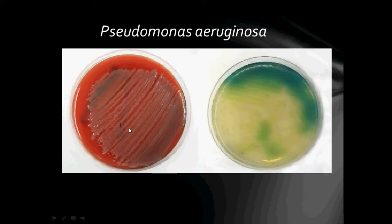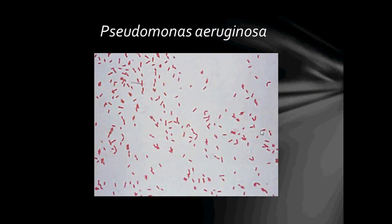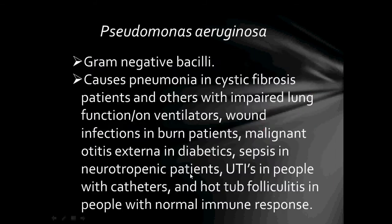Here we have two agar plates: on the left are colonies of Pseudomonas aeruginosa growing on tryptic soy agar, and on the right are colonies growing on Pseudomonas isolation agar. Pseudomonas aeruginosa are gram-negative bacilli and cause pneumonia in cystic fibrosis patients and those with impaired lung function or on ventilators, wound infections in burn patients, malignant otitis externa in diabetics, sepsis in neutropenic patients, urinary tract infections in people with catheters, and hot tub folliculitis in people with normal immune response.